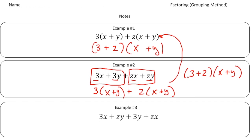So again, this method is called factor by grouping. For this problem we grouped these two terms together and factored out a three, and then we're able to multiply both the x and y by the three plus the z.